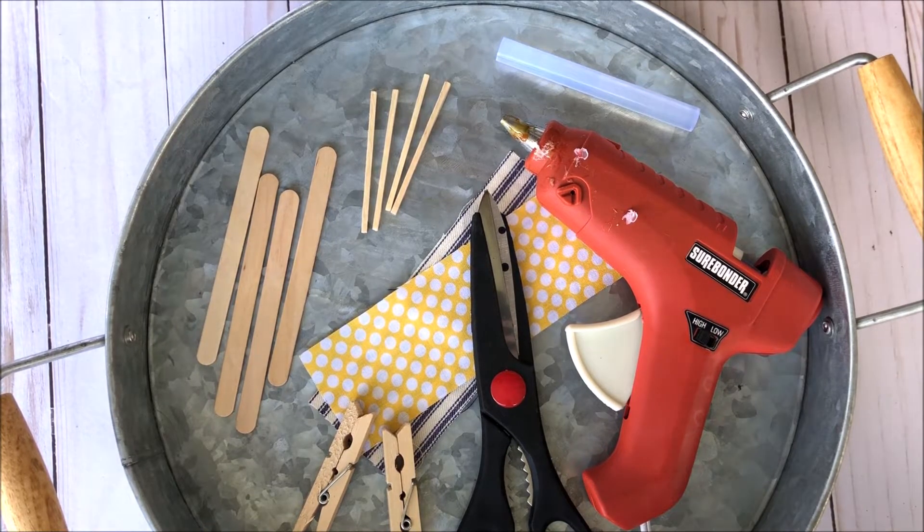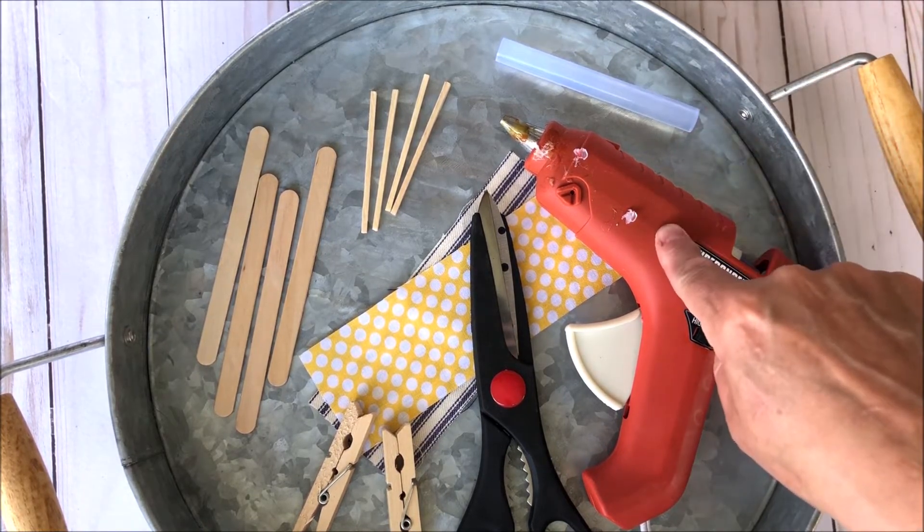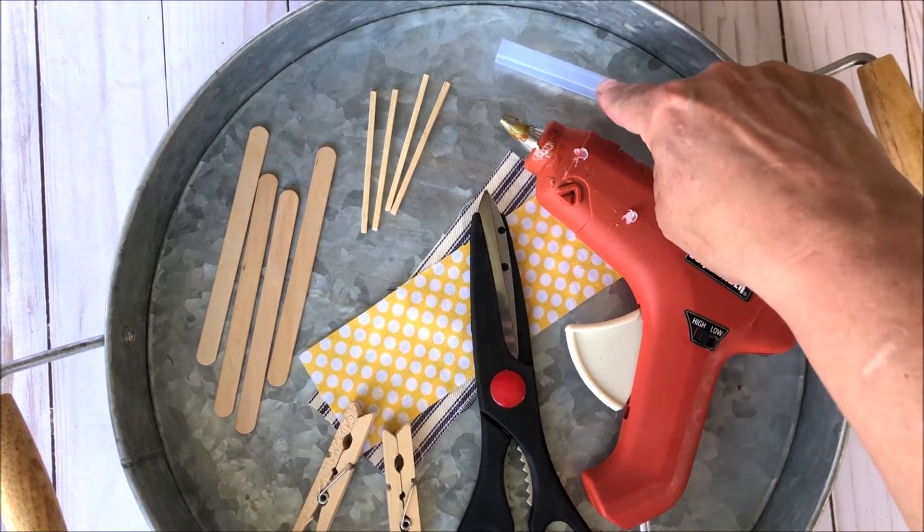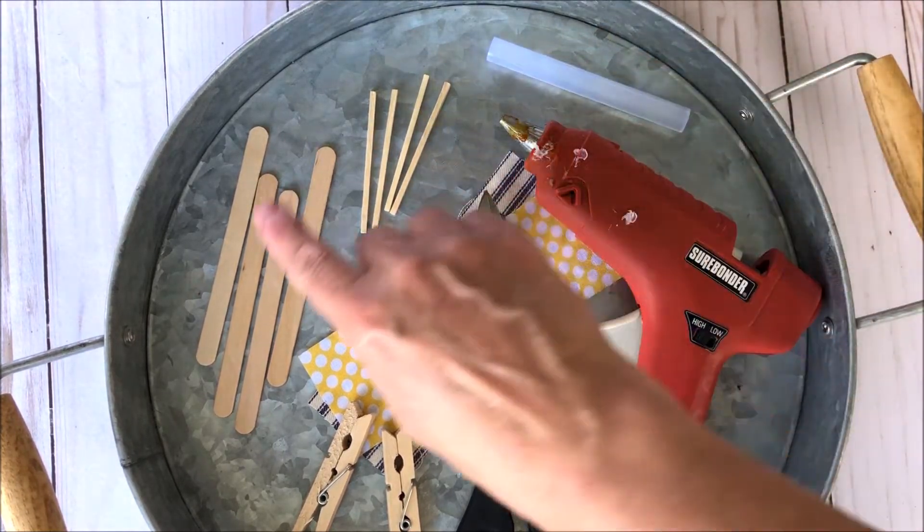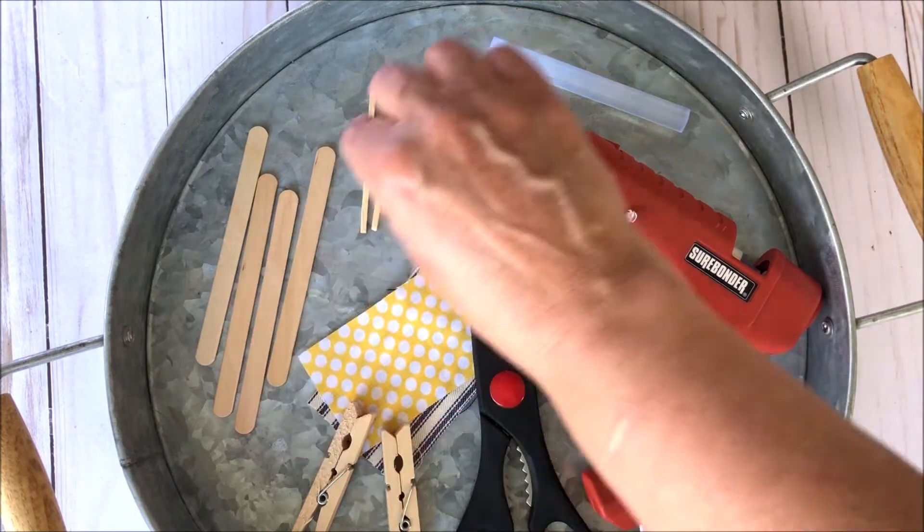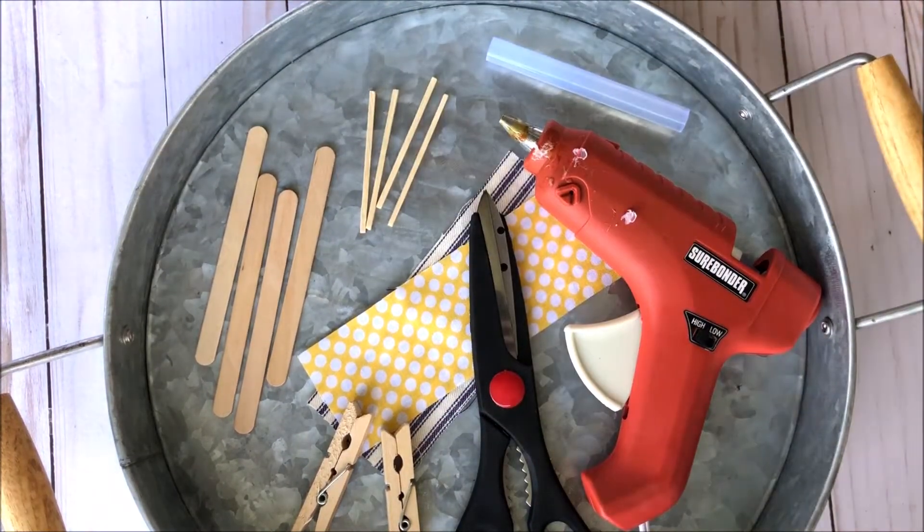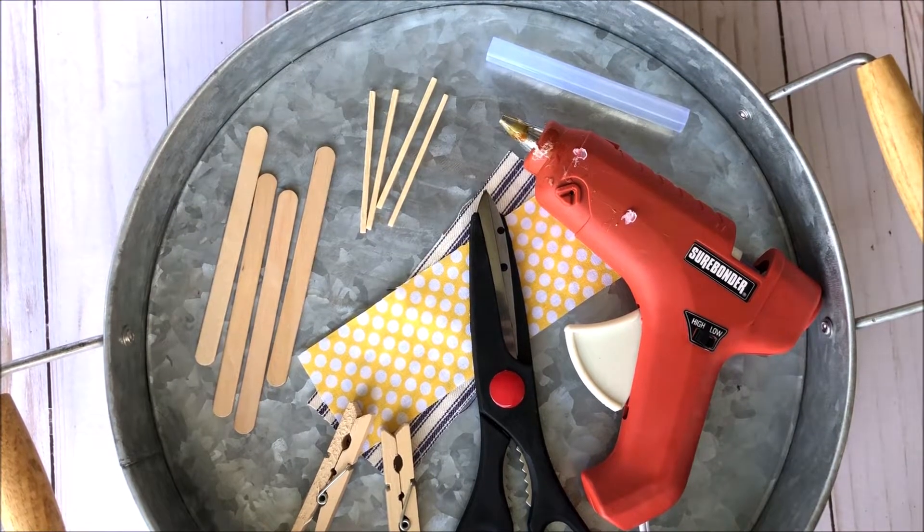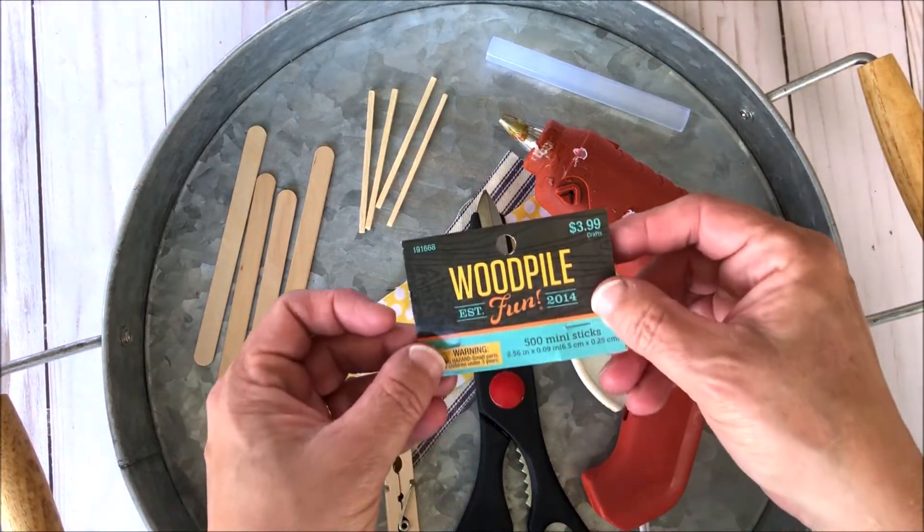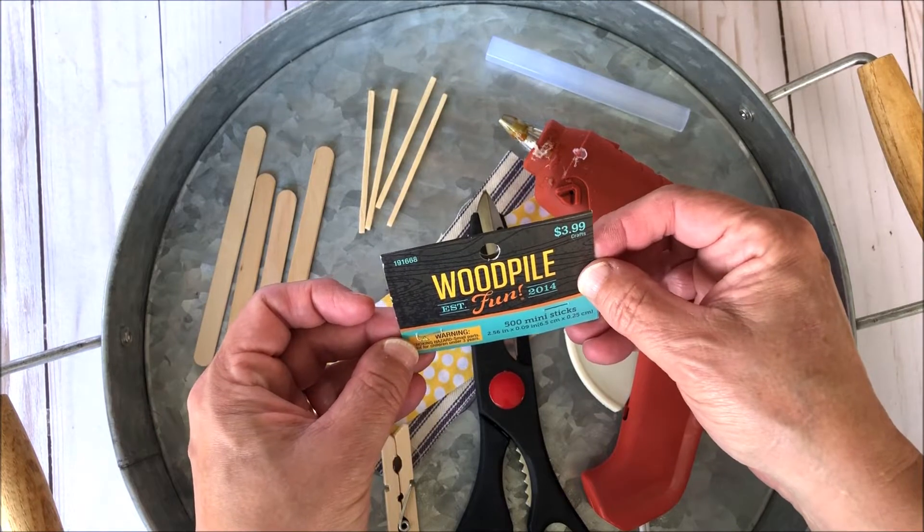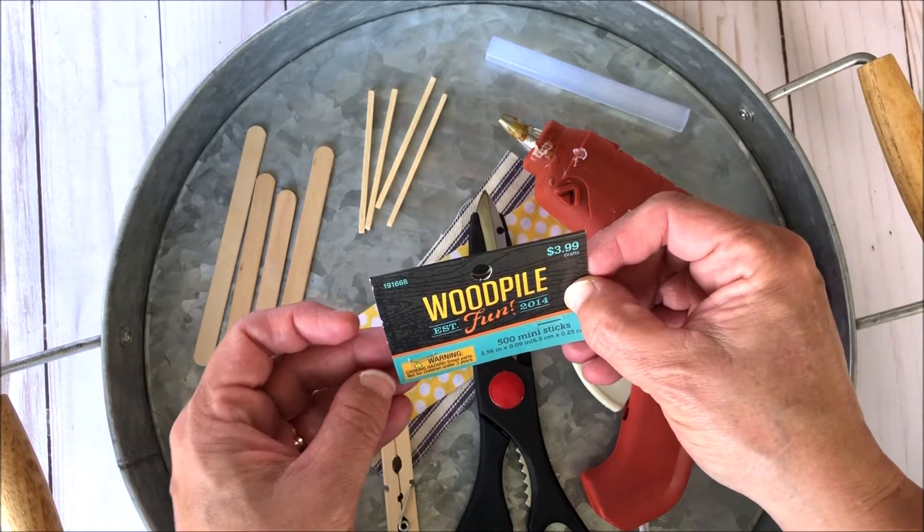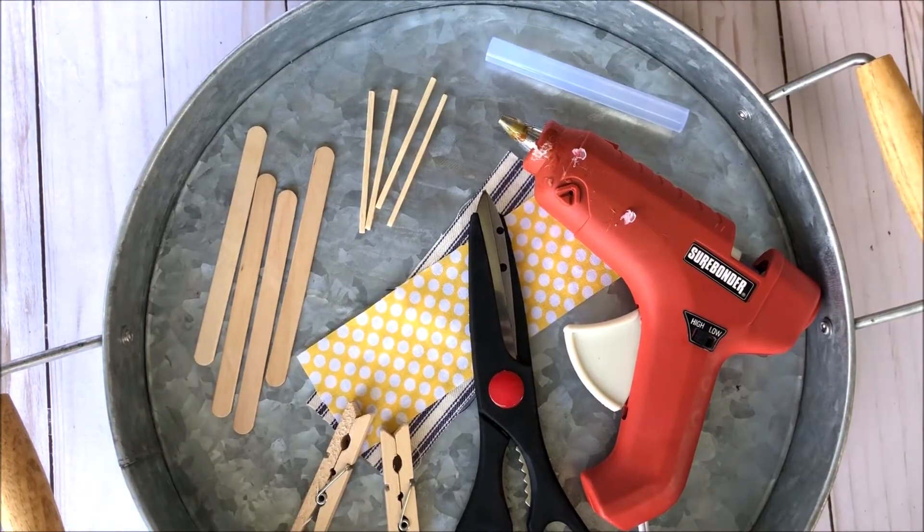The supplies that you need are a hot glue gun, a glue stick in case it's not in your gun already, popsicle sticks, these small wooden pieces from the craft store which I'll show you the label of what mine say. It says woodpile fun 500 mini sticks. I'm not going to use 500 today though.